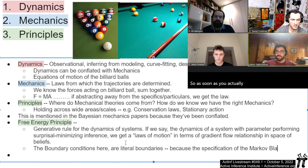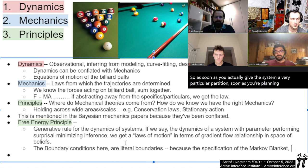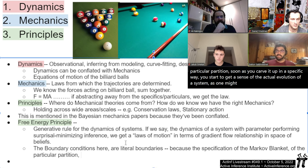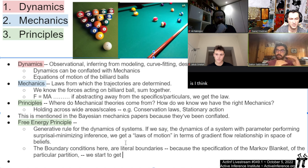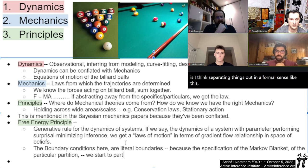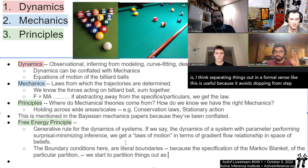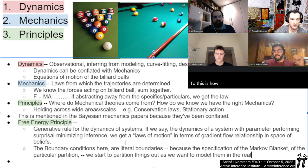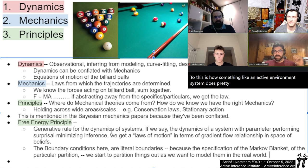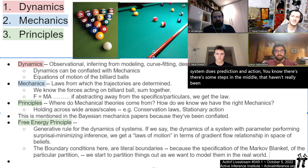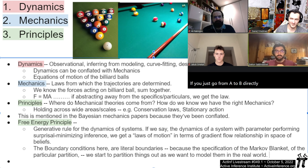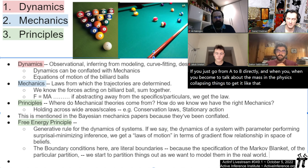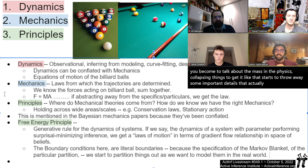Separating things out formally like this is useful because it avoids skipping from step one — minimize variational free energy or surprisal — straight to how an active inference system does prediction and action. There are steps in the middle that haven't really been filled out if you just go from A to B directly. When you begin to talk about the maths and the physics, collapsing things together starts to throw away important details that do make a difference in the way you tell the story.